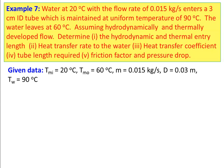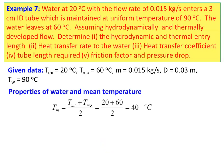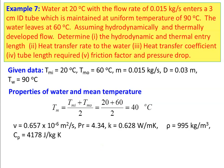Given data: water inlet temperature 20°C, outlet temperature 60°C, mass flow rate 0.015 kg/s, diameter 0.03 m, wall temperature 90°C. Mean temperature Tm = (20 + 60)/2 = 40°C. Properties of water at 40°C: kinematic viscosity = 0.657 × 10⁻⁶ m²/s, Prandtl number = 4.34, thermal conductivity = 0.68 W/m·K, density = 995 kg/m³, specific heat = 4178 J/kg·K.